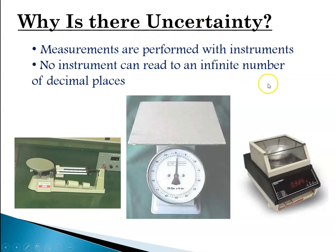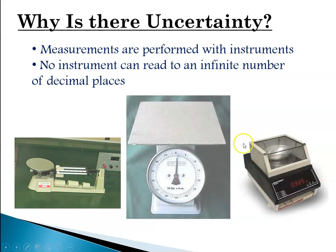Uncertainty tells you whether someone measured something with a piece of string or with a very accurate caliper. Did they use the cheap scale at the grocery store, or an analytical balance capable of going to the thousandths or hundred-thousandths place? Uncertainty is about the type of instrument on which the measurement was made.